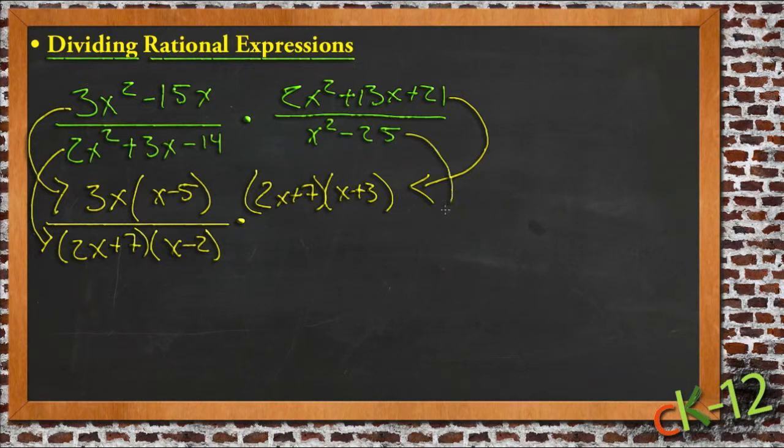And x squared minus 25 is the difference of squares. So it's going to be x plus 5 times x minus 5.